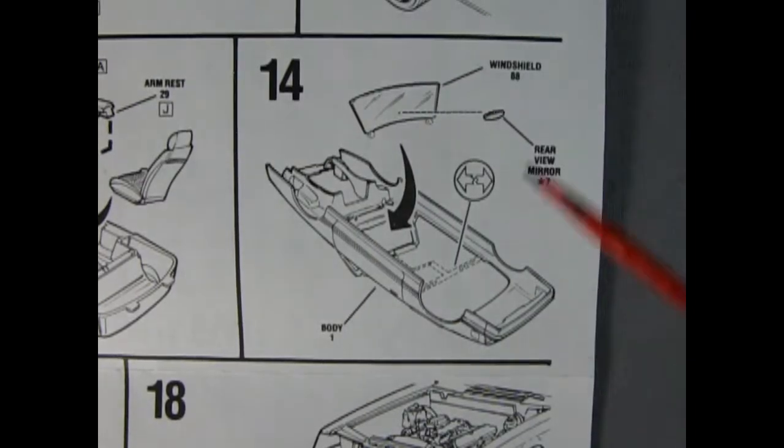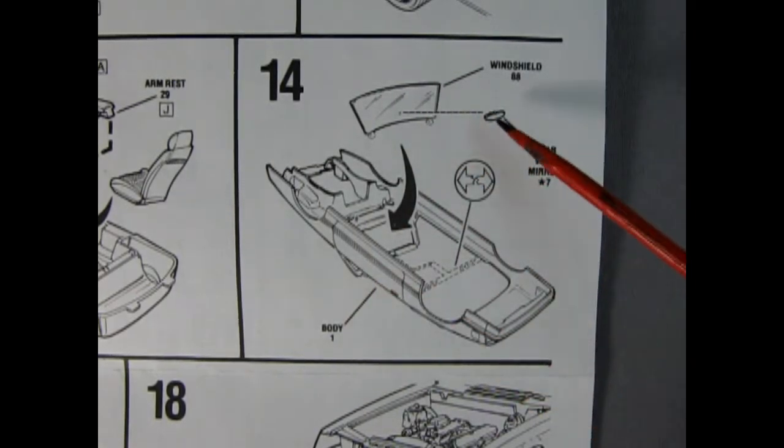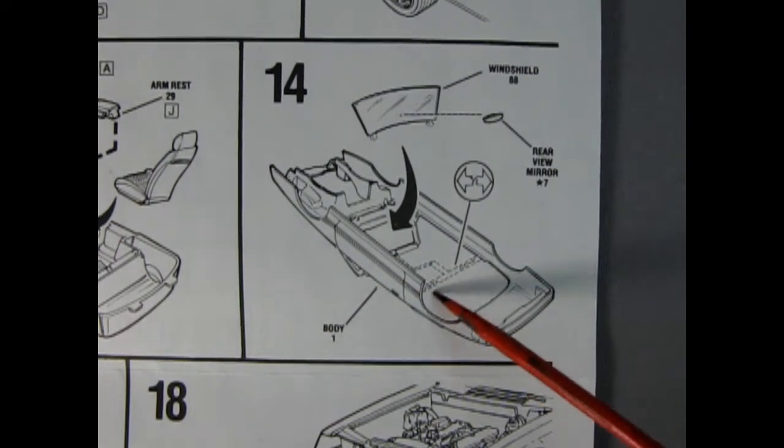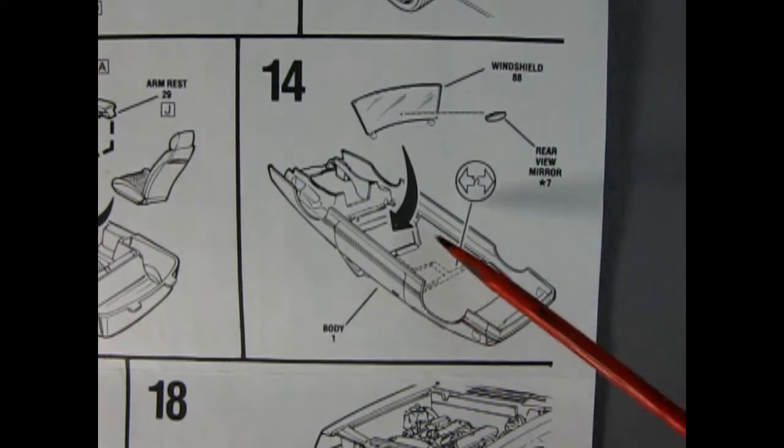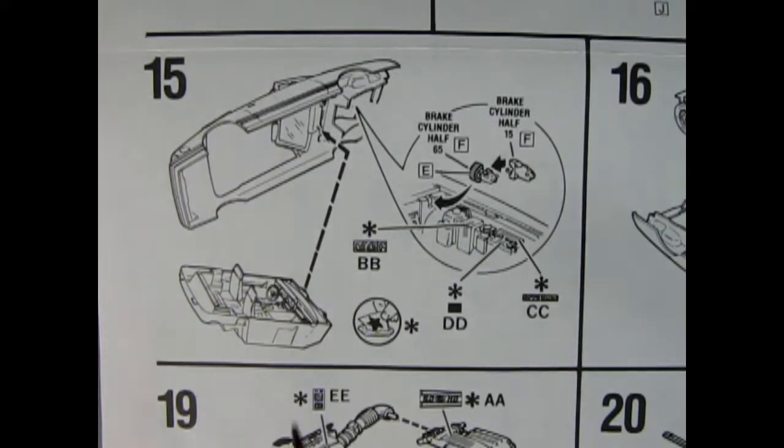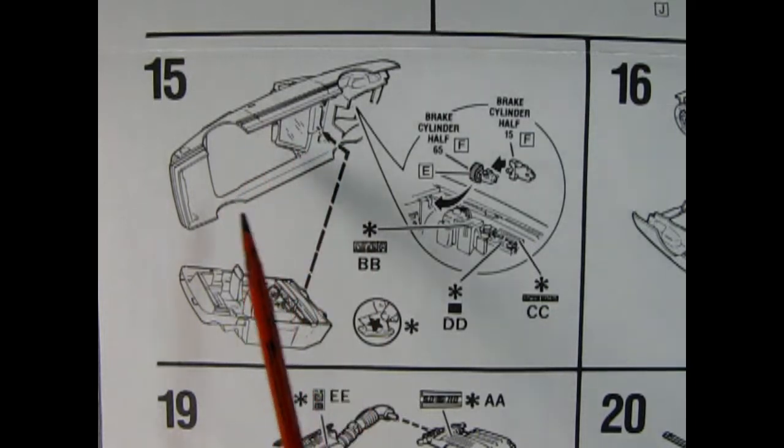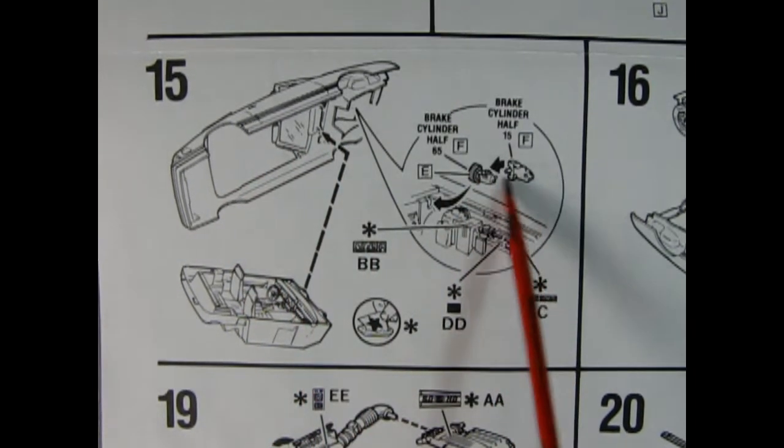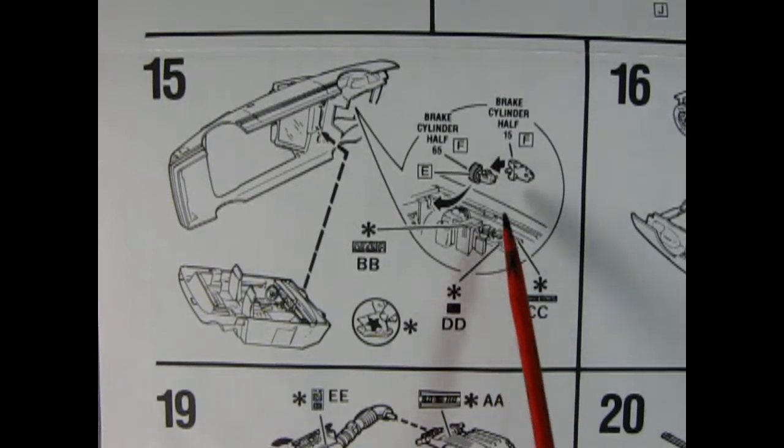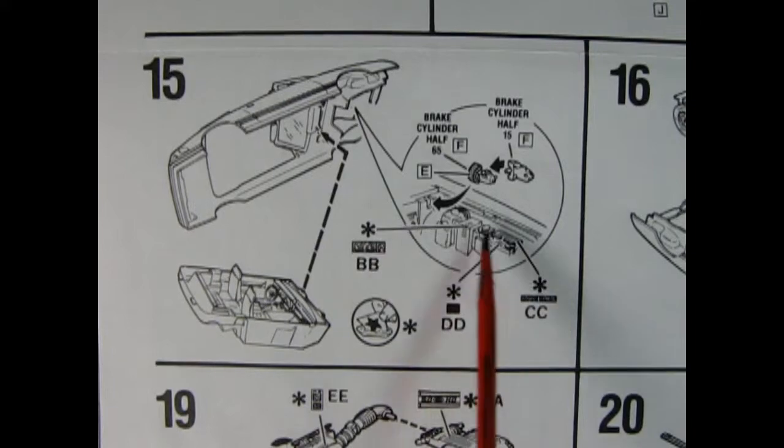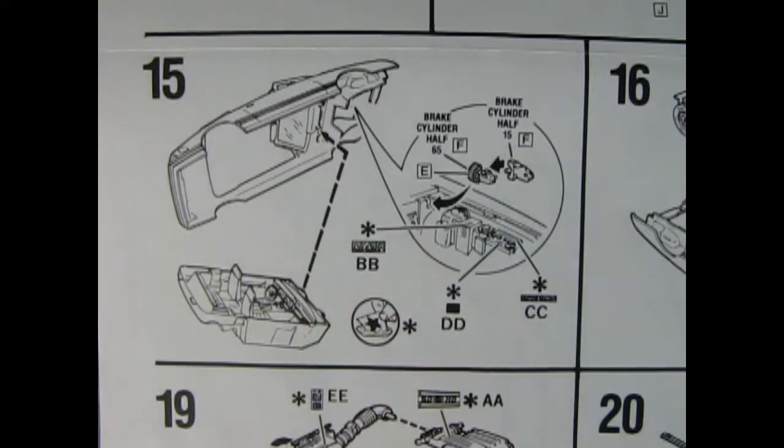Panel 14 shows our front windshield being dropped in place and our rear view mirror. There is this brace in here which needs to be cut out. That was a factory brace to stop the body from warping in the mold. Panel 15 shows our interior tub being dropped into the body shell. Then you put in your brake master cylinder in two halves. That drops inside your interior. Then we've got some decals which will go on to the top. We'll take a look at those at the end of the video.